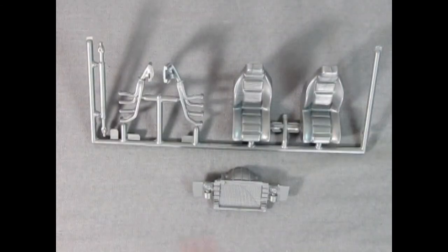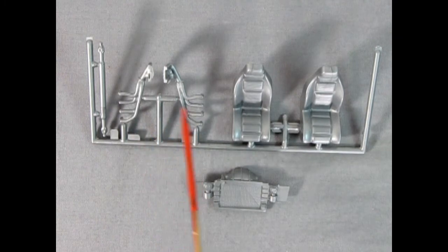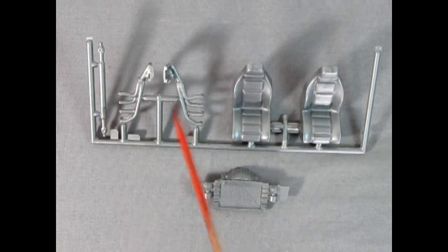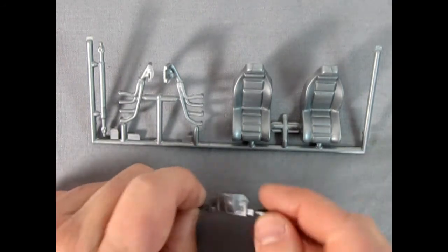Here we have our bucket seats which again are quite nice. There's our exhaust manifolds and our driveshaft. And loose in the box was our radiator and rad support.